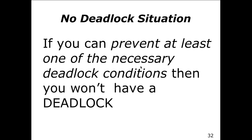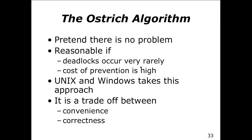If you can prevent at least one of the necessary deadlock conditions, you'll never have a deadlock — in theory. But operating systems still deadlock, and most deadlock avoidance techniques slow down the OS. Instead of preventing it, you create a situation where if it occurs, you can deal with it. This is called the ostrich algorithm: pretend there is no problem. The ostrich puts its head in the sand. This is what most operating systems do today.